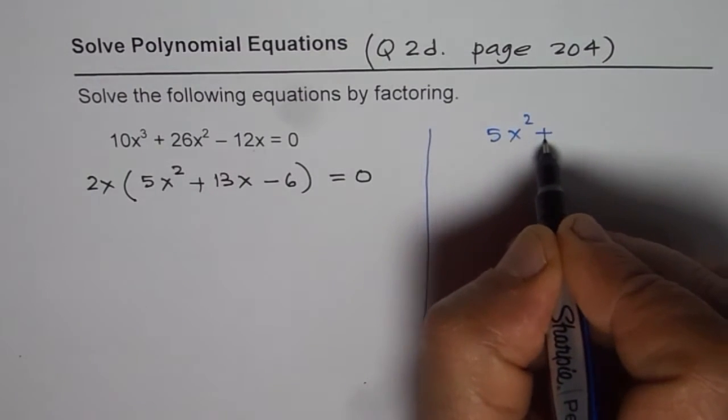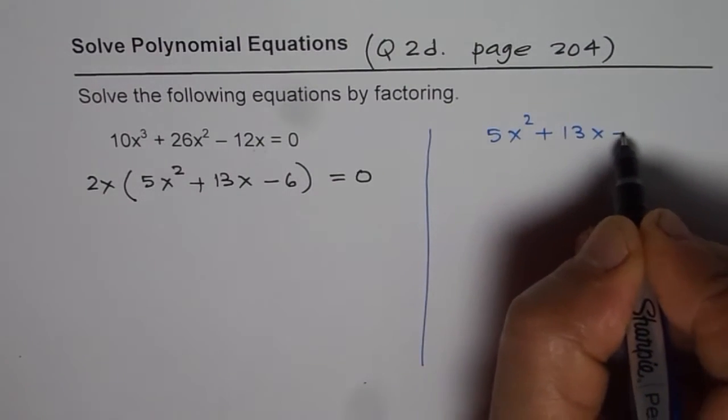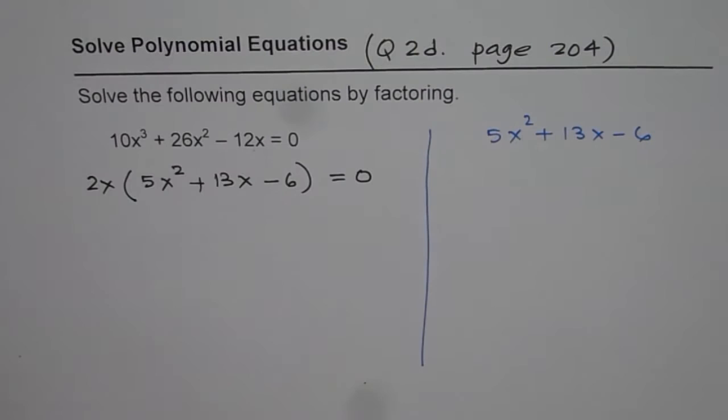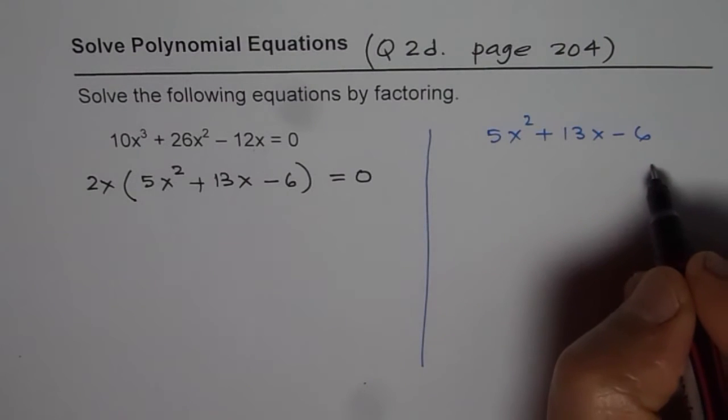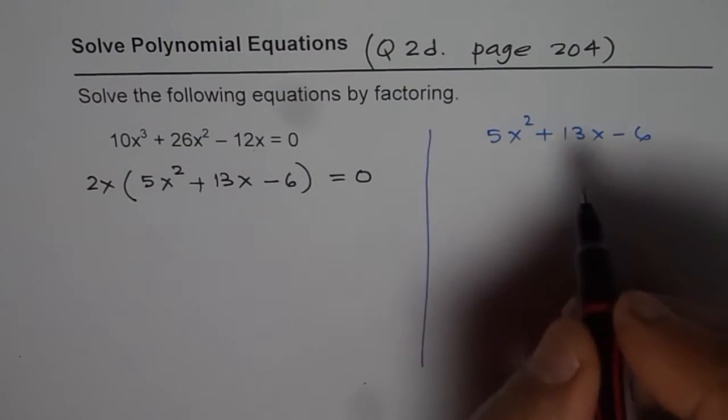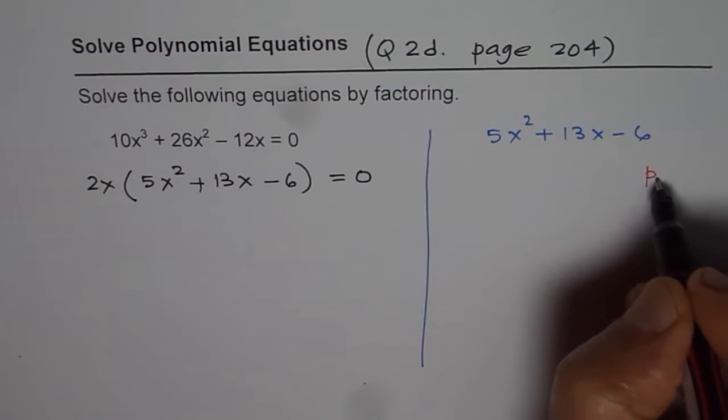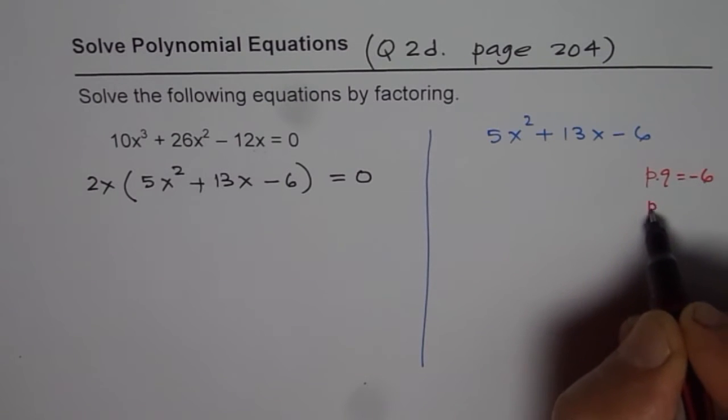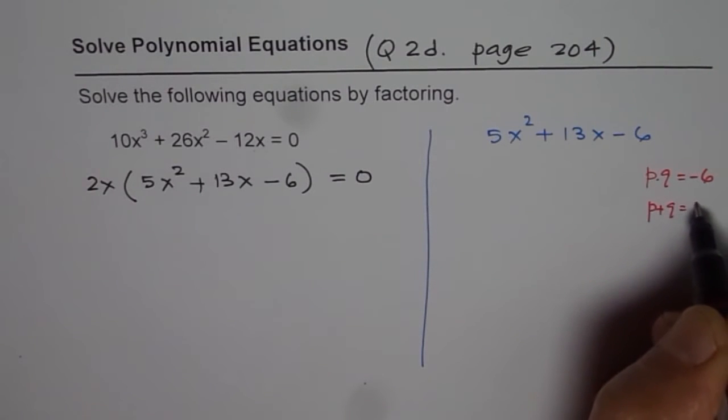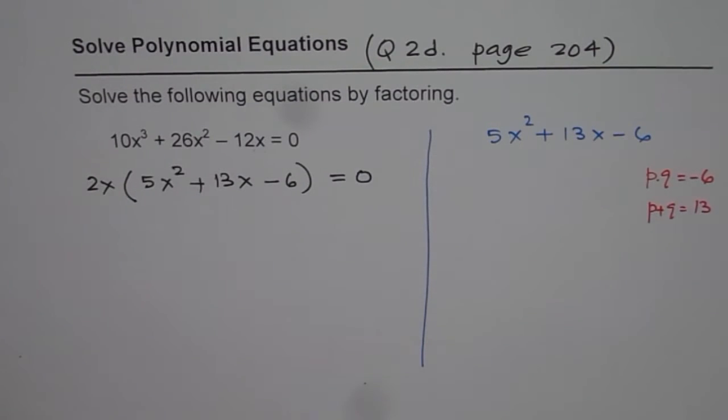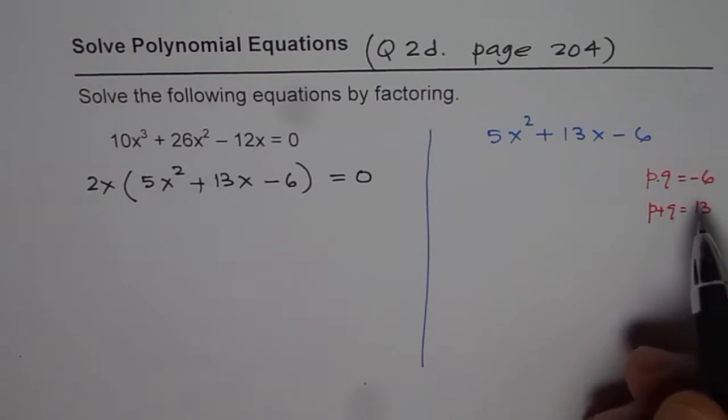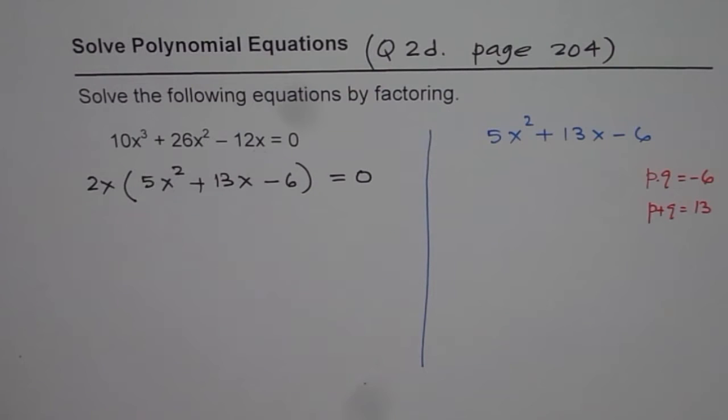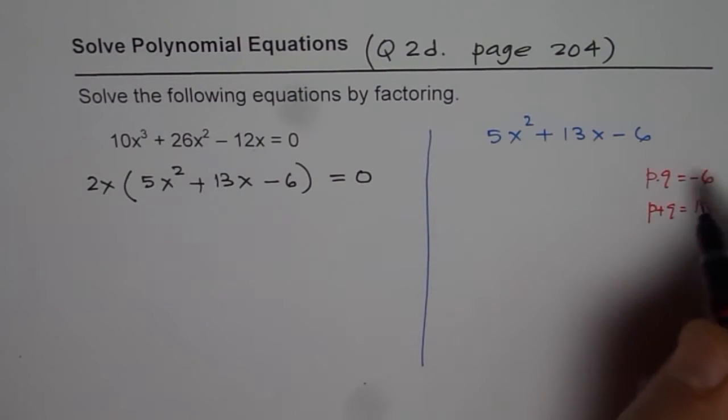So, we have 5x squared plus 13x minus 6. We are looking for two numbers whose product is minus 6. So, we are looking for two numbers, p and q for example. p times q should be equal to minus 6 and their sum should be equal to plus 13. So, what are these two numbers? Sorry, the product is 6 times 5, 30.